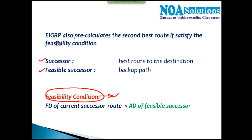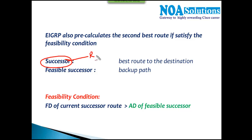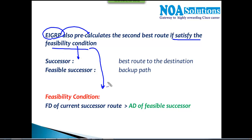As discussed in previous videos, EIGRP pre-calculates the second best route. It calculates the best route, which we call the successor, and also the second best route, which we call the feasible successor. The successor route is present in both the routing table and the topology table, whereas the feasible successor is only in the topology table. EIGRP pre-calculates the second best route, but it must satisfy a condition called the feasibility condition.